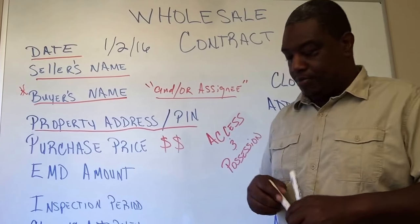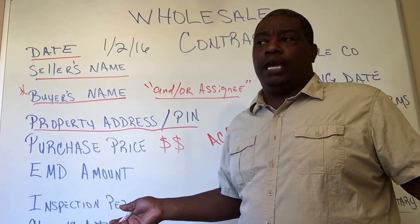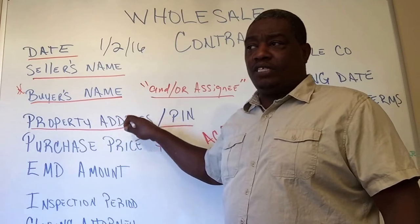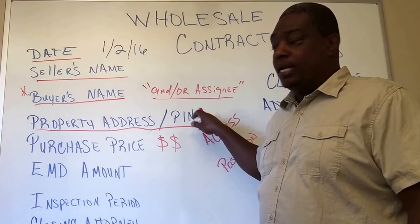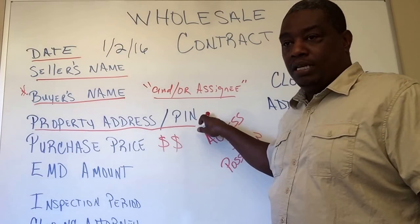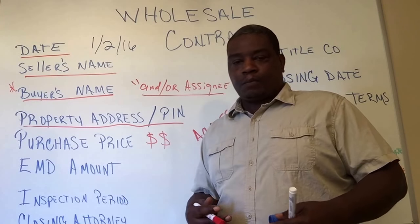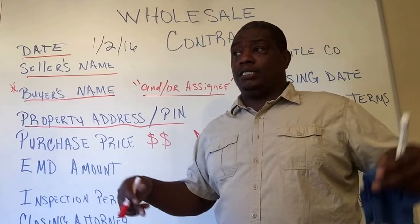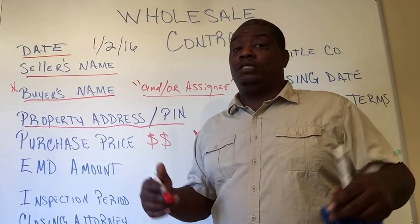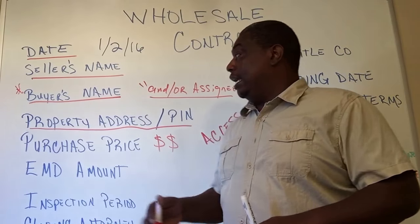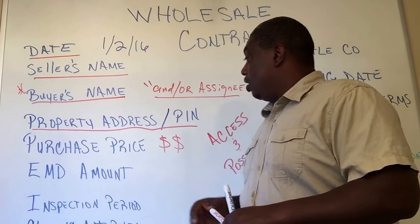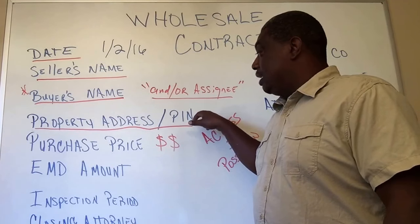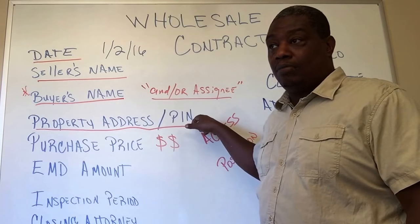Next is the property address and PIN number. You need the physical address — for example, 123 Main Street. But not only do you need the physical address, you also need the parcel identification number (PIN). The county looks for this PIN because there are new subdivisions being built and it happens that two homes in the same county can have the exact same address. So the property identification number is what uniquely identifies that specific property.